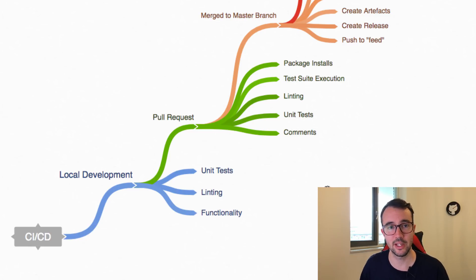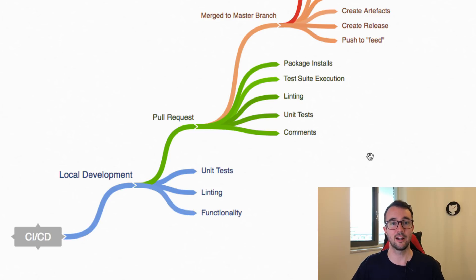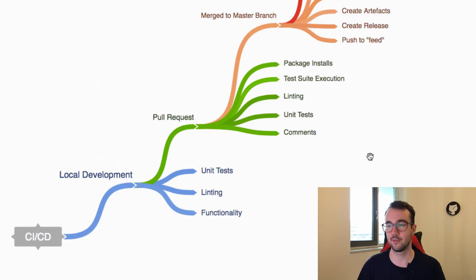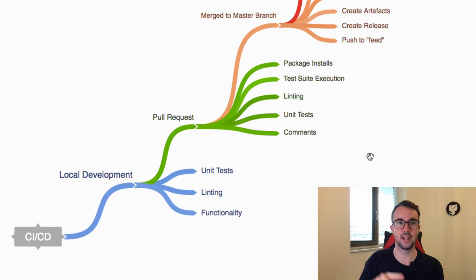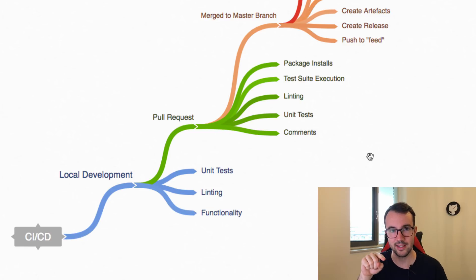Things like linting we can also do locally, and I can spin up a web server locally to get feedback for myself. Once I've done all that and I'm happy, I'm going to do a pull request into the master branch — from the development branch or whatever feature branch I'm working on — because I want to integrate my code into master. That will kick off an automated process as soon as the pull request is created via a webhook to our tool.